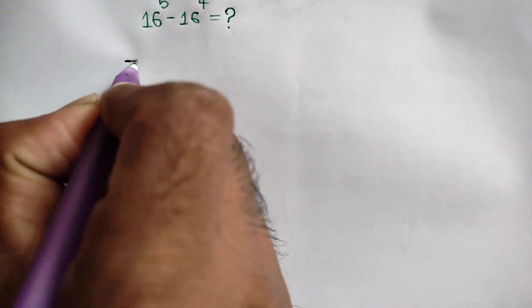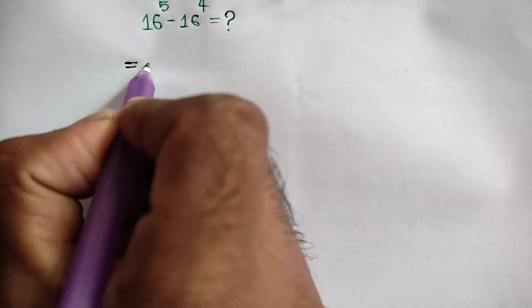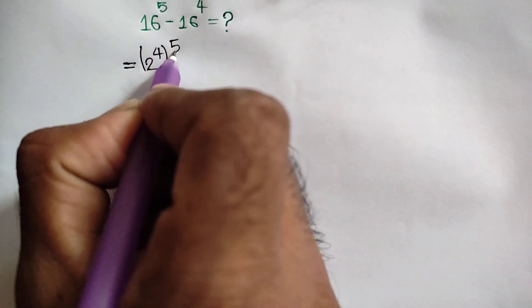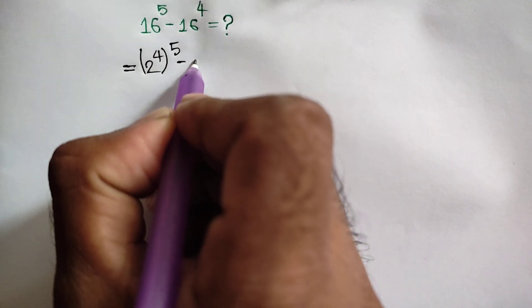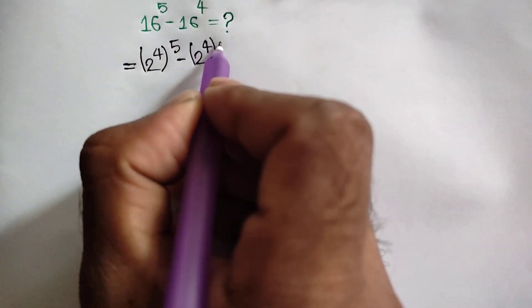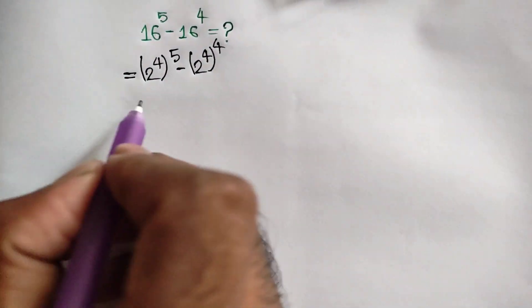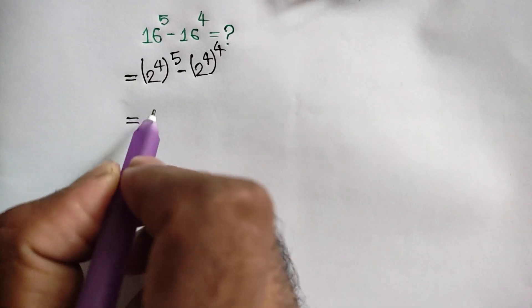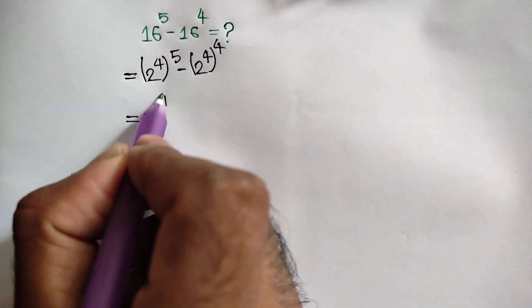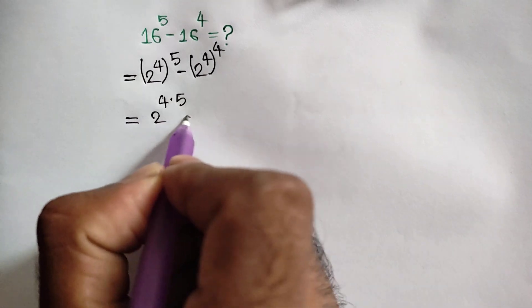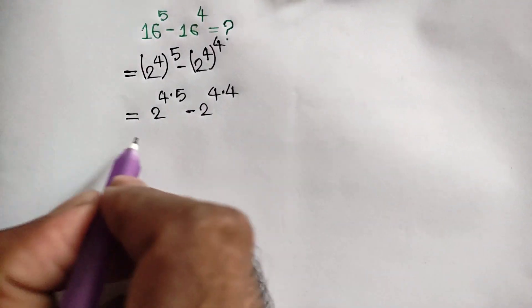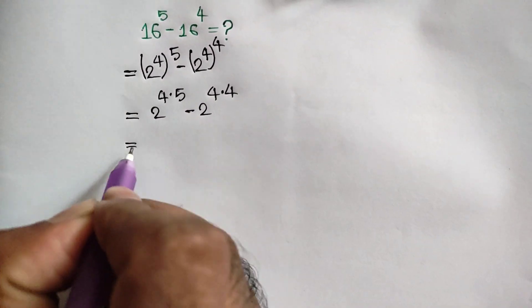16 can be written as 2 to the power 4, so we have 2 to the power 4, to the power 5 minus, similarly we can write 2 to the power 4, to the power 4. This gives us 2 to the power 4 times 5 minus 2 to the power 4 times 4.